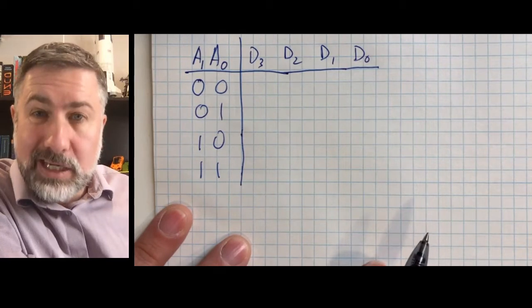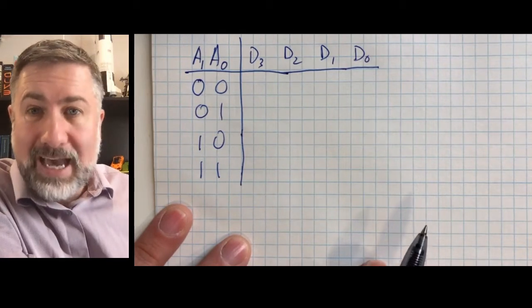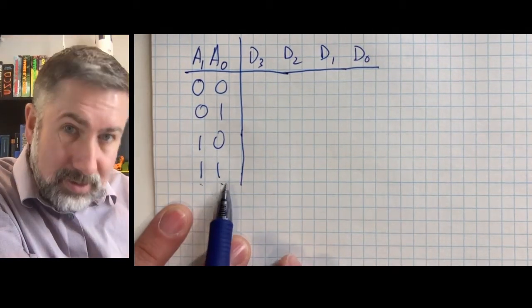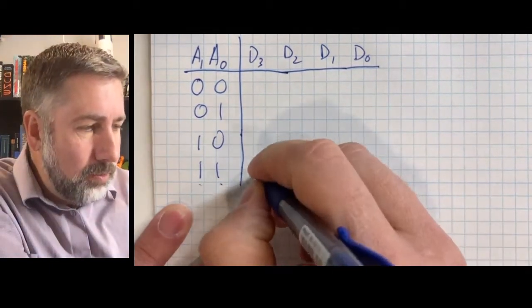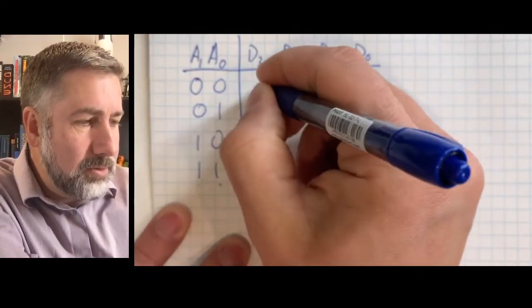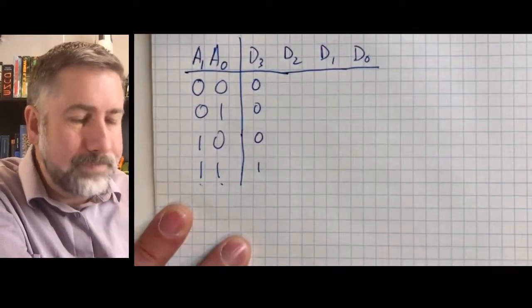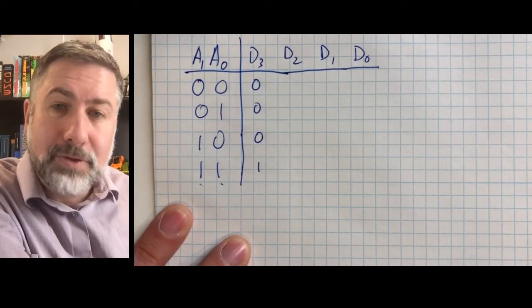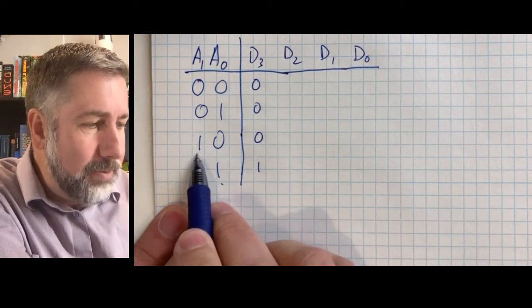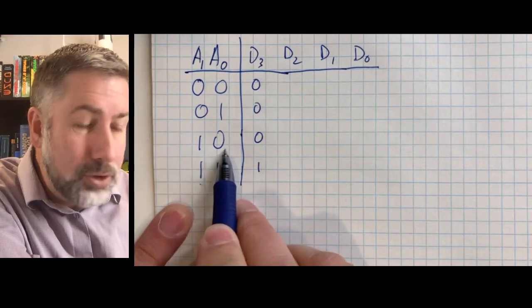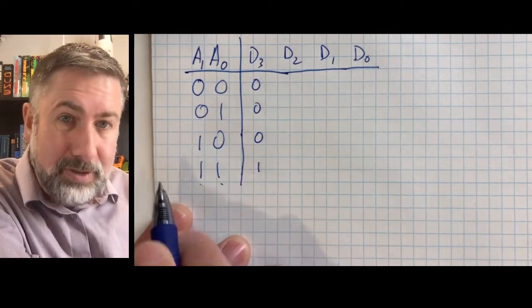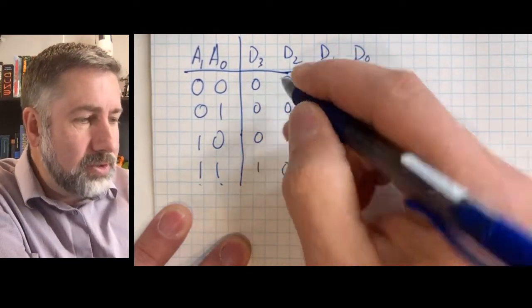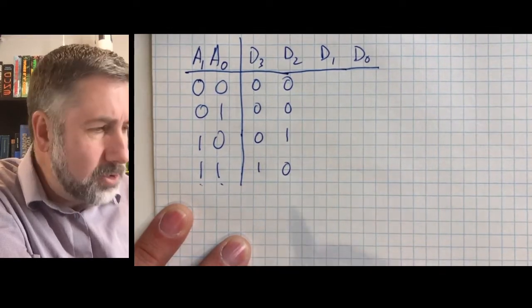D3 should be activated when minterm 3 is active, so its output pattern is 1, 0, 0, 0. D2 should be active when minterm 2 is selected — when we give a 2 on the input, we get 0, 1, 0, 0 on the output. I hope you can see where this is going.